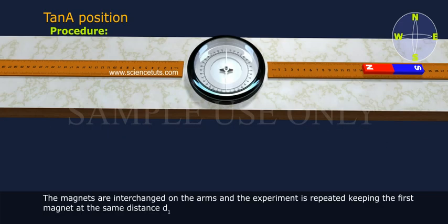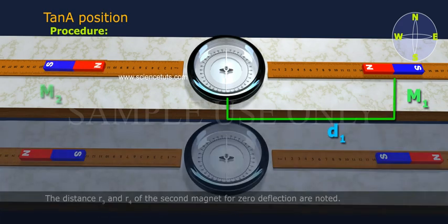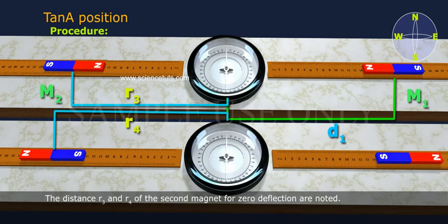The magnets are interchanged on the arms and the experiment is repeated keeping the first magnet at the same distance D1. The distance R3 and R4 of the second magnet for zero deflection are noted.